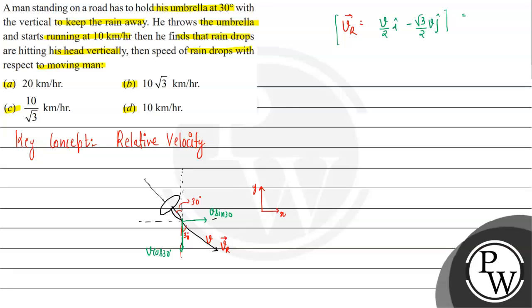When he throws the umbrella and starts running at 10 kilometers per hour, the velocity of the rain with respect to the man equals the velocity of rain minus velocity of the man. When the man is standing still, his velocity is zero, so the velocity of rain with respect to the man equals the velocity of rain. But when the man starts running at 10 km per hour, we need to account for this.